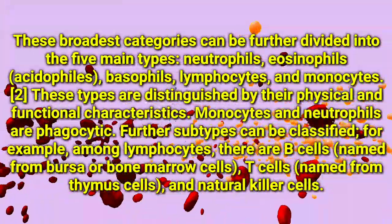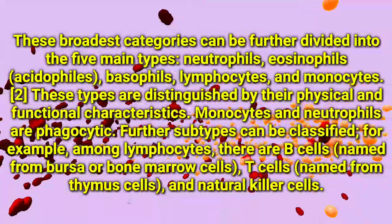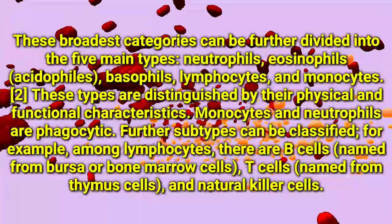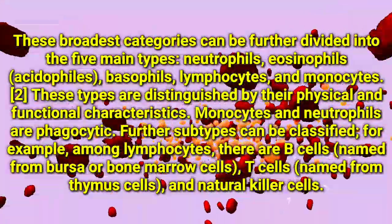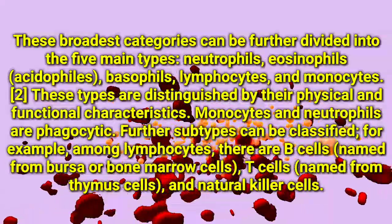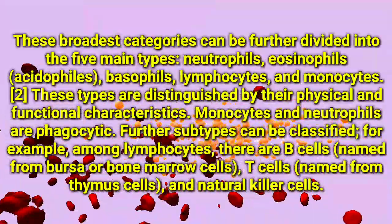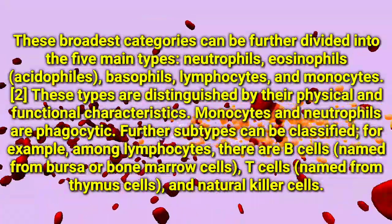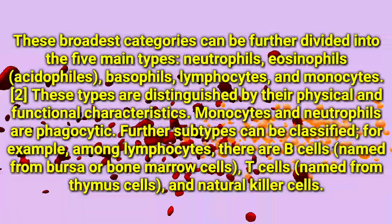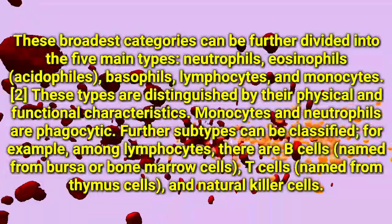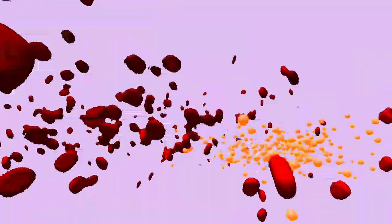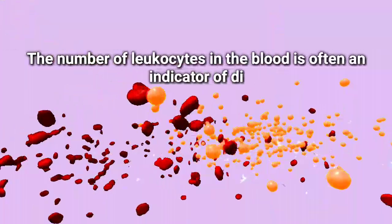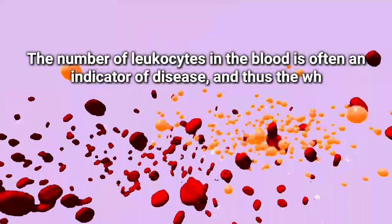Among lymphocytes, further classification includes B cells, named from bursa or bone marrow cells; T cells, named from thymus cells; and natural killer cells. The number of leukocytes in the blood is often an indicator of disease.